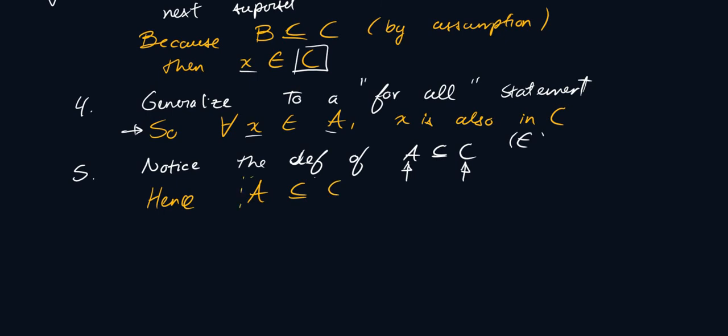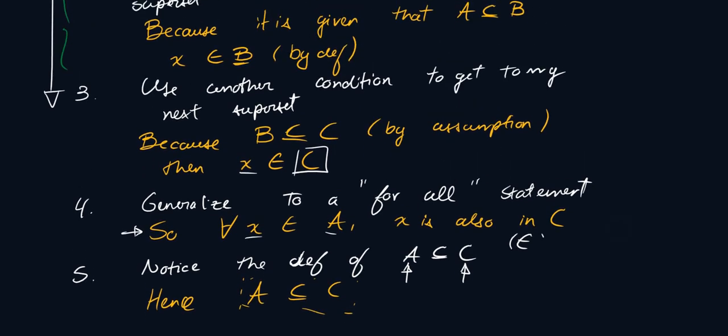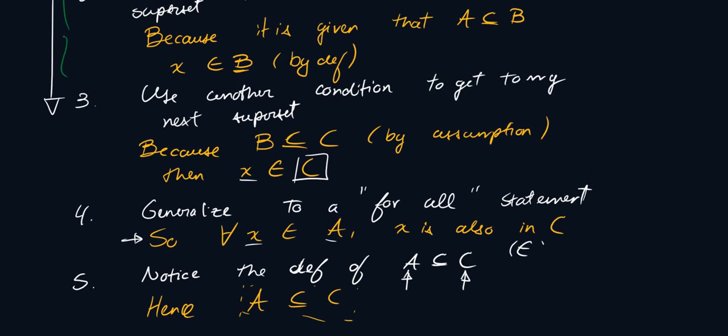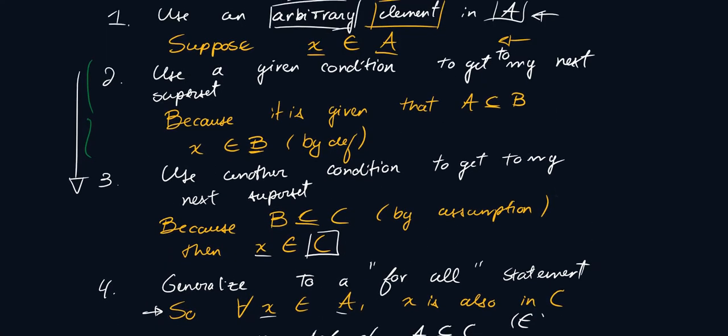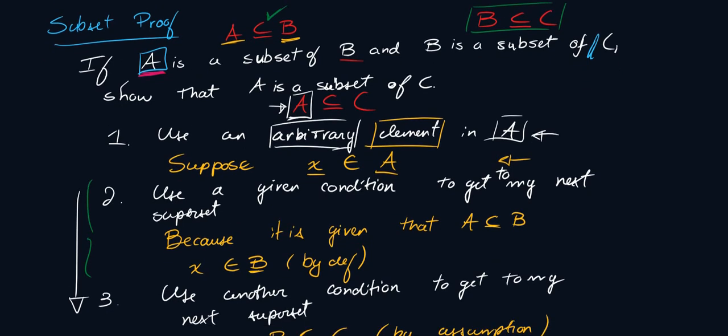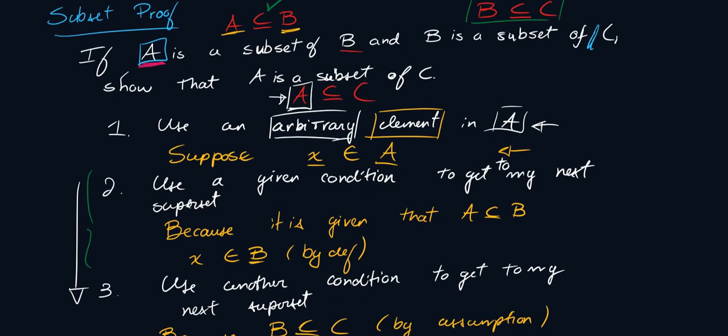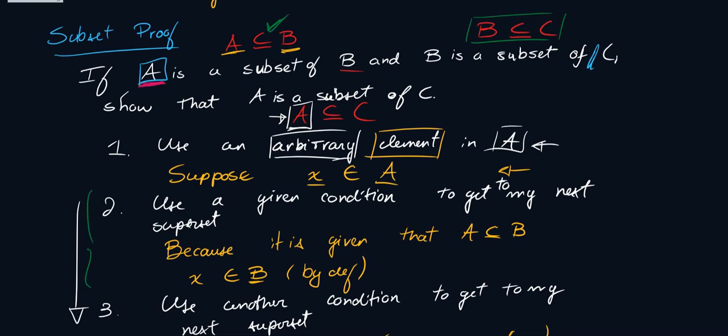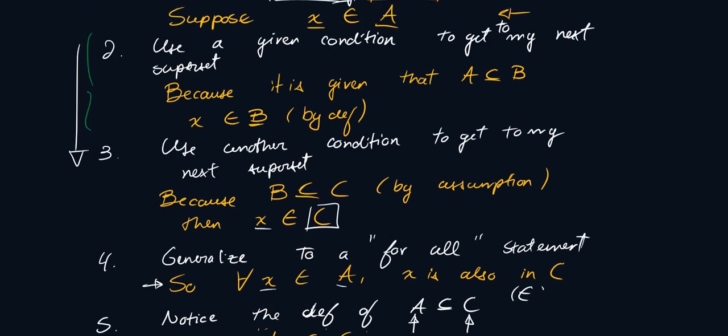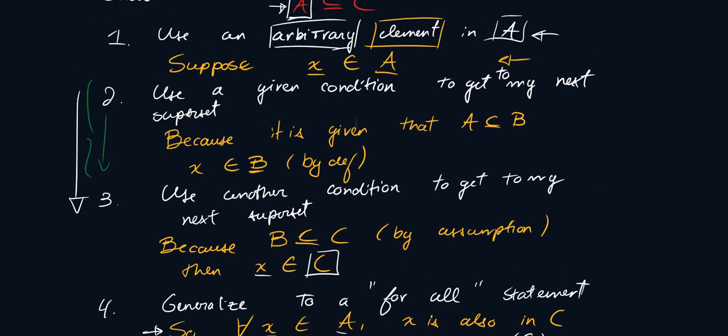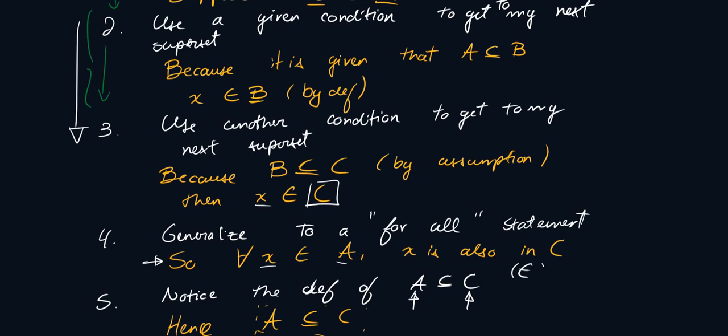And that's it, that's exactly how you would have proven a subset proof. Of course, sometimes it'll be more difficult, but typically that's what you do. You use the conditions that are given to you, so I used A as a subset of B, and then I used B as a subset of C. And I got from X belonging to A to X belonging to C. The most important part is to know how to get these transitions. And then the second most important part is knowing how this can generalize to a for all. So that was a proof on a subset.